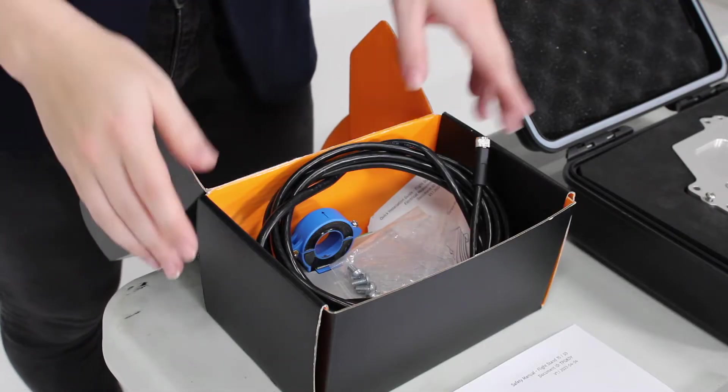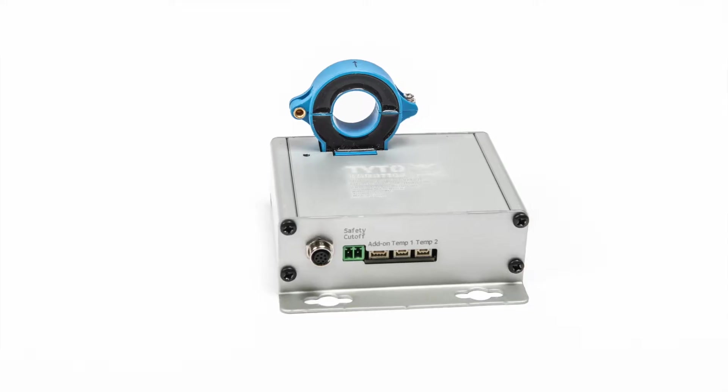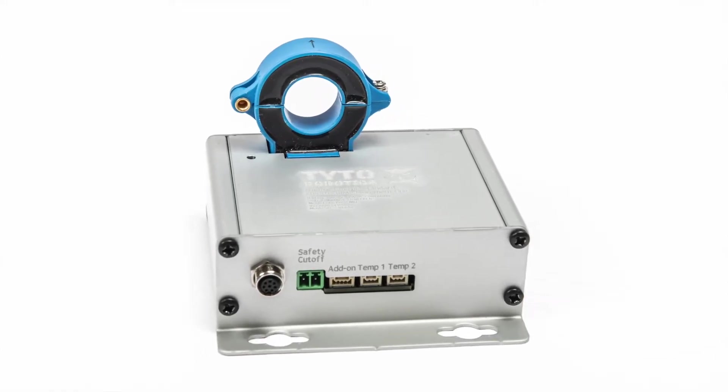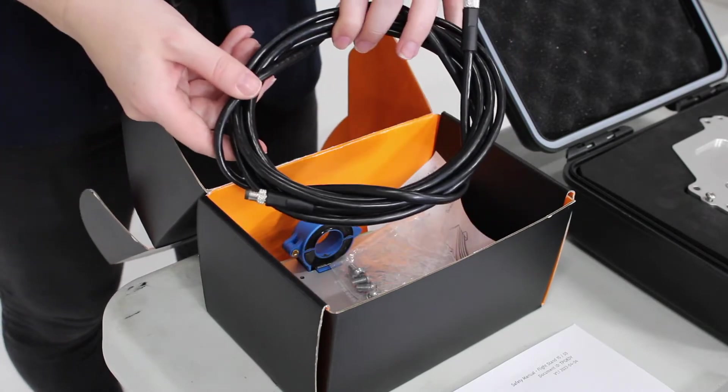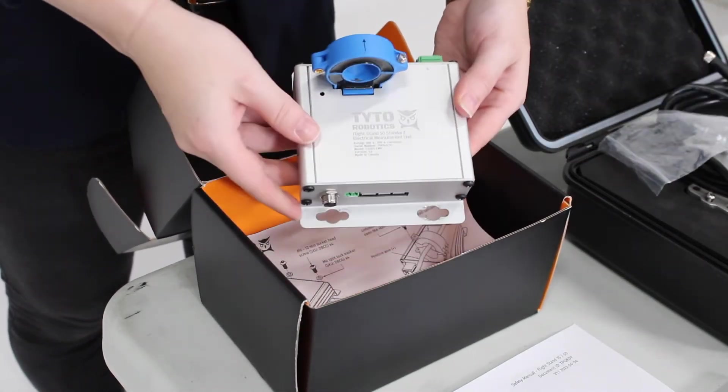In this first box we have the Electrical Measurement Unit or EMU. The EMU connects to your ESC and measures voltage and current. In this box we have the M8 cable, the screws, and the EMU itself.